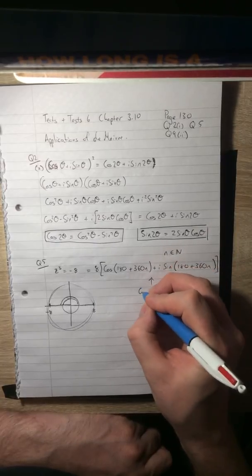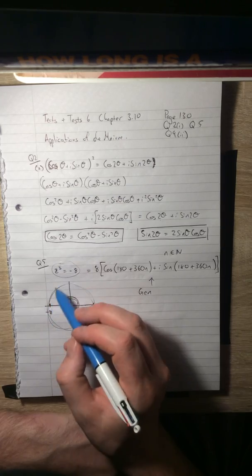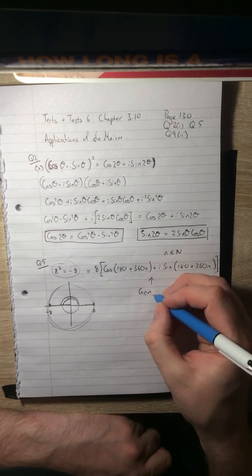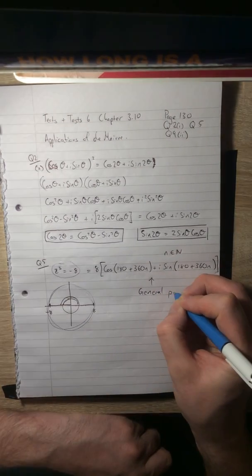And this is general polar form, and it's really important that you know how to use it. Any question that asks you to find roots, which is what we're about to do, we're about to find the cube root of -8, and there's three of them. Needs you to work in general polar form.